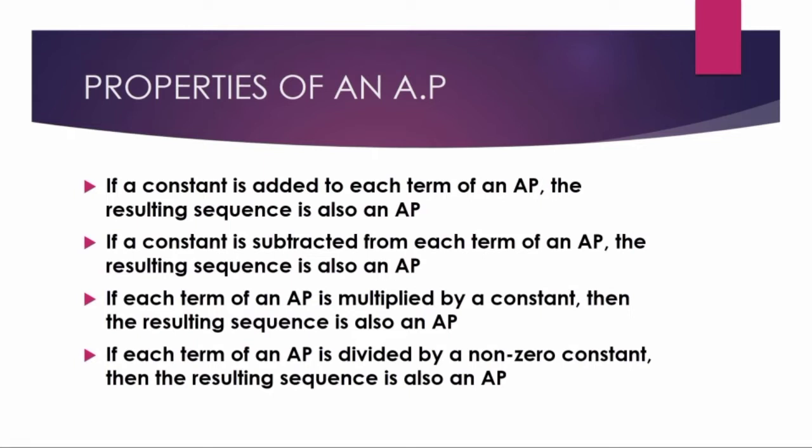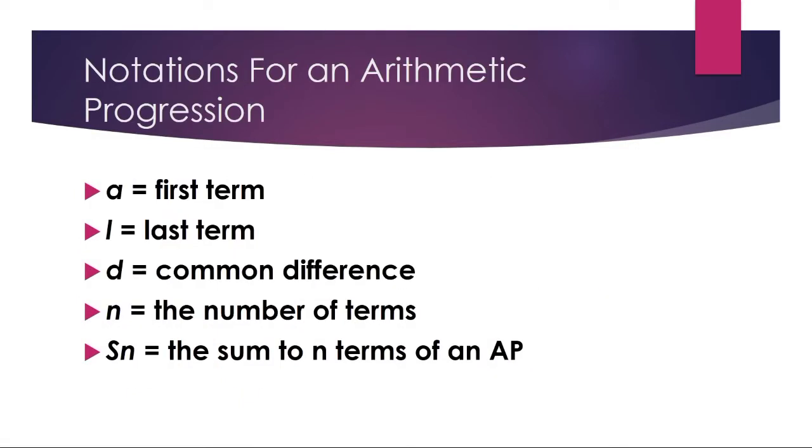These four properties are known as properties of an AP. Now we are going to cover notations for an arithmetic progression. The first term is denoted by the letter A, the common difference — the difference between two consecutive terms — is denoted by the letter D, the number of terms is denoted by N, and the sum of N terms of an AP is denoted by S_N.